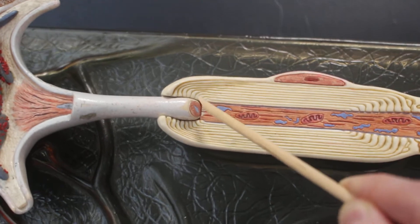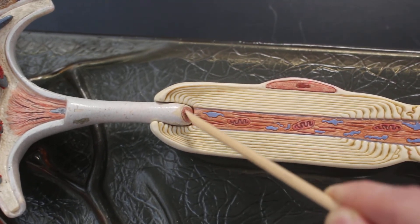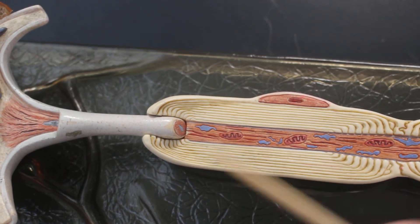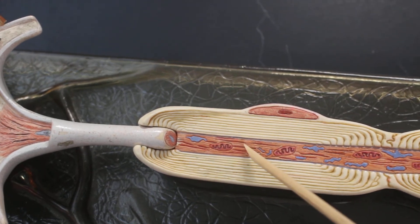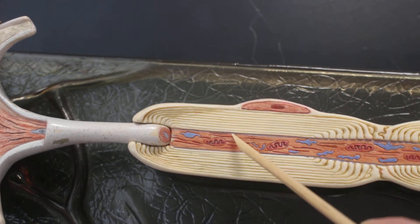The white layer of the axon, that is the axolemma. The sort of clear space within the axon, that would be axoplasm.